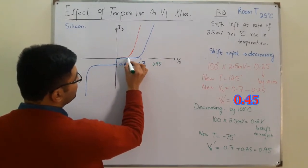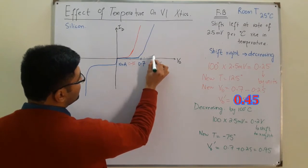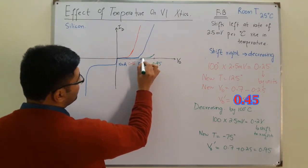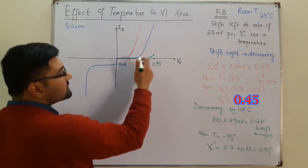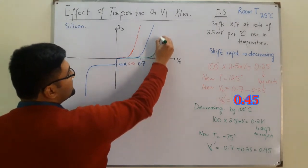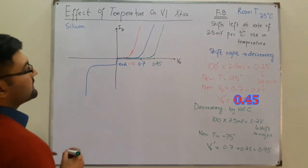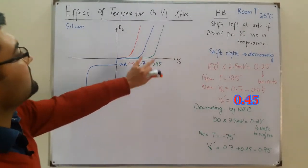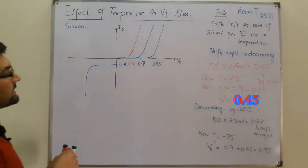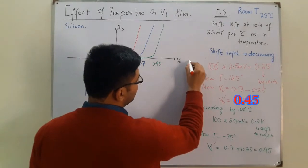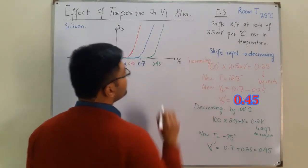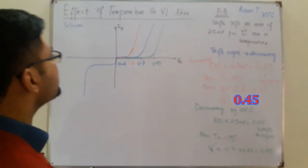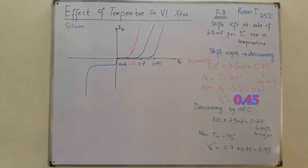The new barrier potential VB' would be 0.7 plus 0.25, which equals 0.95 volts. The red color indicates an increase in temperature and the green indicates a decrease in temperature on the graph.